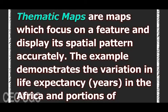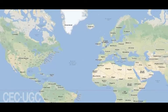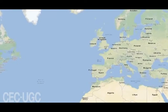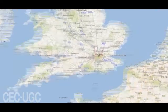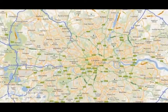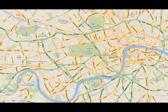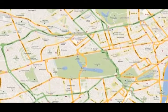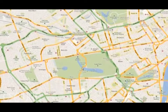An example demonstrates the variation in life expectancy, in years, in Africa and the proportion in southern Europe and the Middle East. The graphic language used to represent information about the world, whether thematic or referential, consists of points, lines, and area symbols.